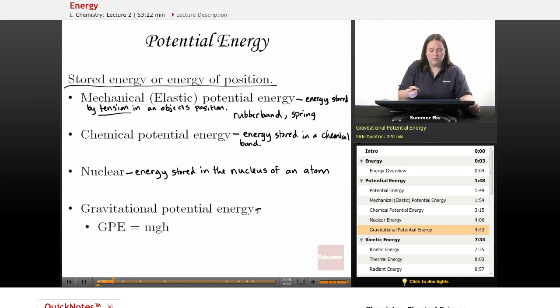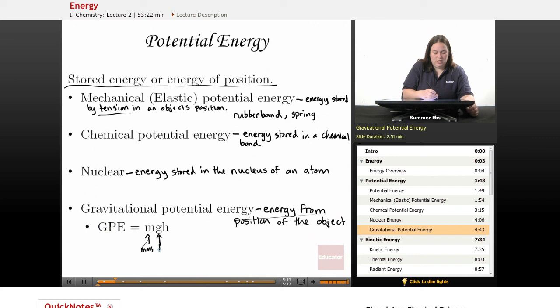The last type of potential energy is gravitational potential energy. This is energy that exists, stored from the position of the object. This one has a formula that goes along with it. GPE, gravitational potential energy, equals M for mass, G, this is gravitational acceleration.